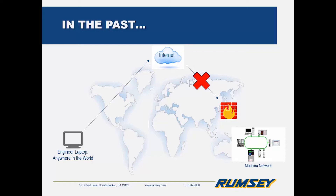This solution is known as port forwarding. It's fundamentally flawed from a security standpoint and exposes devices to the outside internet that literally anyone can access. And since IT's visibility into the plant floor is usually limited, even though they might not know a PLC is being accessed, they just know they don't want anyone outside their organization touching it. So generally speaking, it's a non-starter.